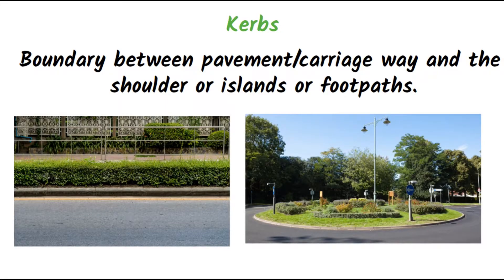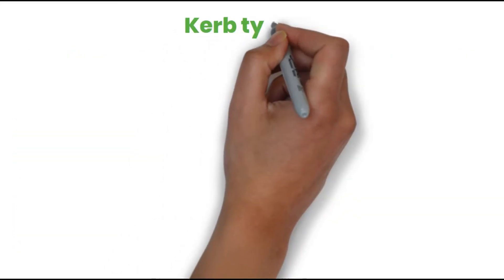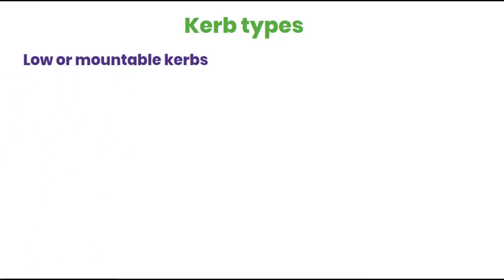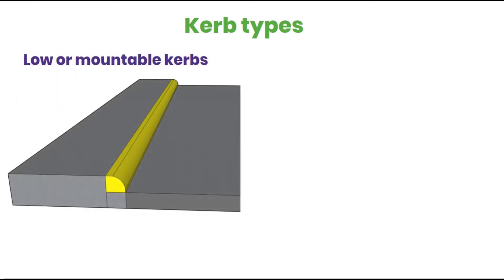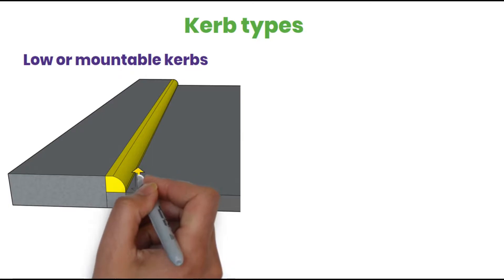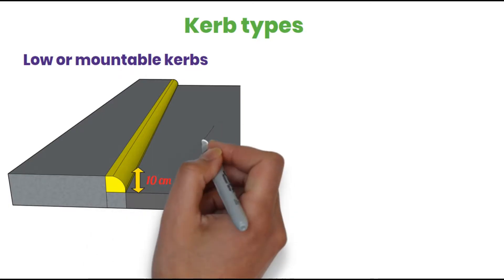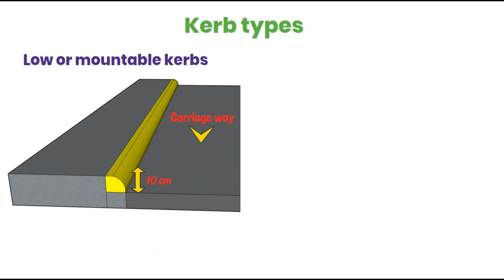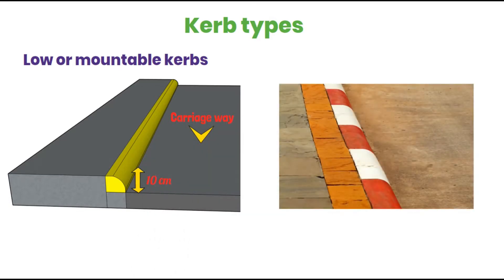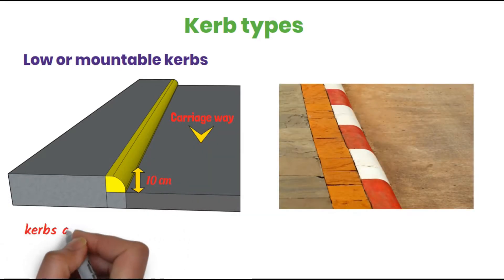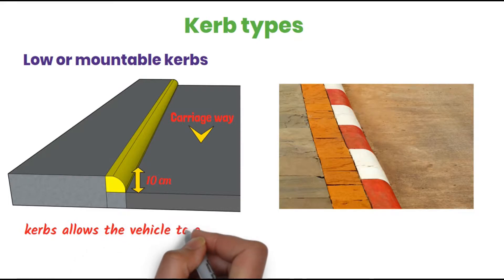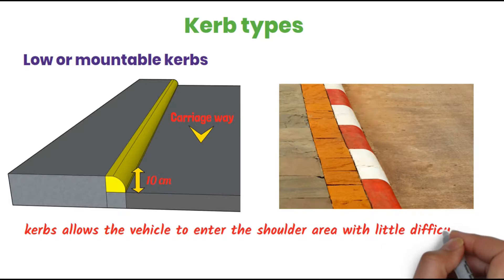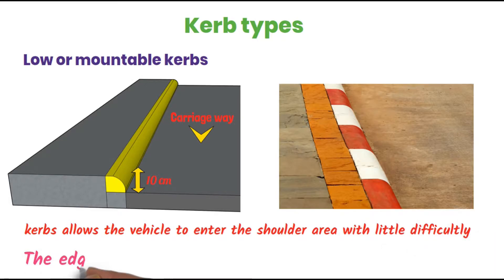There are different types of curbs. The first one is low or mountable curbs. The height is around 10 cm on the pavement or carriageway side. This curb allows the vehicle to enter the shoulder area with little difficulty, since it is only 10 cm in height.